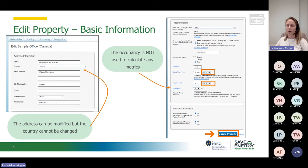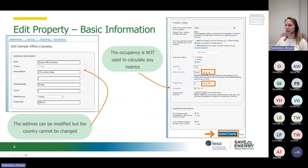The only thing you cannot change in basic information is the country — once you've created the property, you cannot go back and edit the country. When you go into the property use details, you can edit more information such as the year the building was built, the gross floor area, and occupancy. This is more basic, high-level information and won't include specific details for a particular building type like an office building.